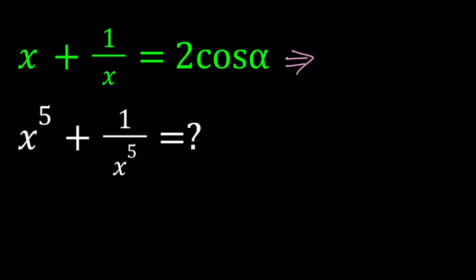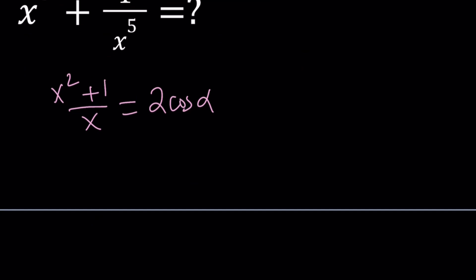Here's what I'm going to do. Make a common denominator. That gives me x squared plus 1 over x equals 2 cosine alpha. And then I'll cross-multiply. x squared plus 1 equals 2x cosine alpha. I can write it as 2 cosine alpha times x, but I like to write it as 2x cosine alpha. The coefficient of x is 2 cosine alpha.